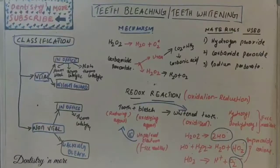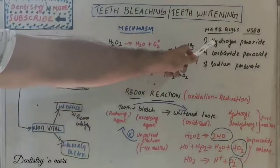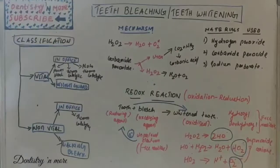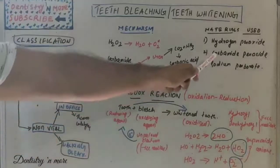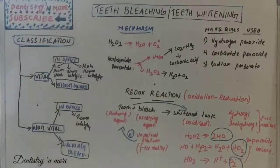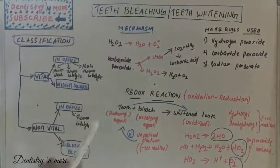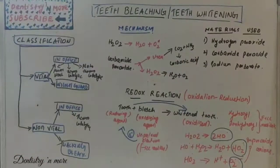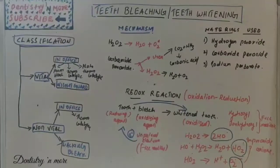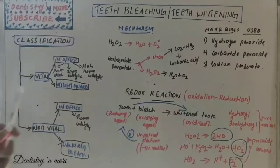The materials commonly used for bleaching are: hydrogen peroxide, carbamide peroxide, and sodium perborate. Ultimately, it is hydrogen peroxide that carries out the process of bleaching.